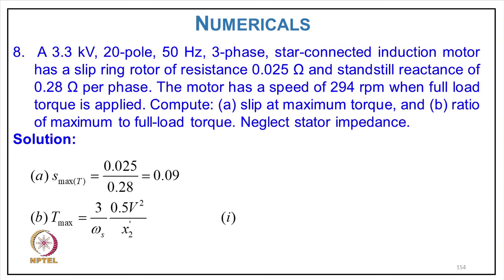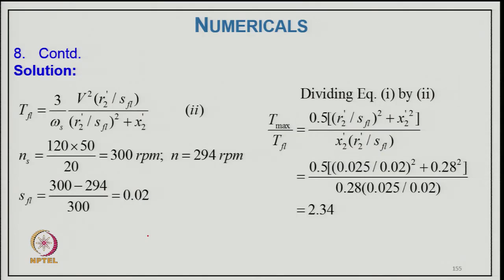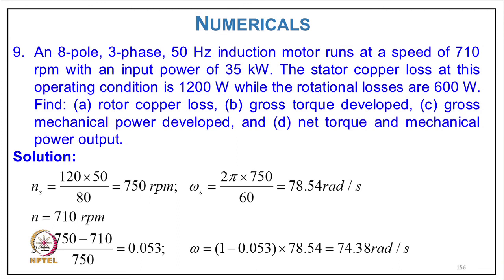Numerical Example 8: A 3.3 kV, 20-pole, 50 Hz, three-phase, star-connected induction motor has a slip ring rotor with resistance 0.025 Ω and standstill reactance 0.28 Ω per phase. Motor speed = 294 RPM at full load torque; synchronous speed Ns = 300 RPM, so slip = (300−294)/300 = 0.02. Slip at maximum torque: s_tmax = R2/X2 = 0.025/0.28 = 0.089. Ratio of maximum torque to full-load torque: T_max/T_fl = (s_fl² + s_tmax²)/(2·s_fl·s_tmax) evaluated to give a ratio of approximately 2.34.